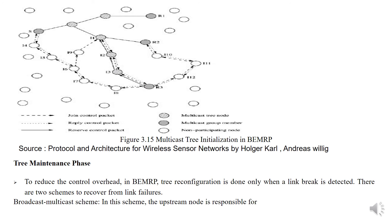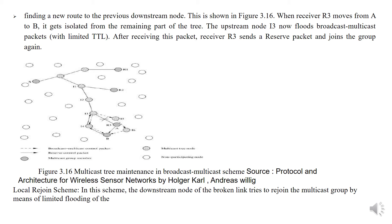The tree maintenance phase: to reduce the control overhead in BEMRP, reconfiguration is done only when a link break is detected. There are two schemes to recover from link failures. Broadcast multicast scheme: in this scheme, the upstream node is responsible for finding a new route to the previous downstream node, as shown in figure 3.16. When receiver R3 moves from A to B, it gets isolated from the remaining part of the tree. The upstream node i3 now floods broadcast multicast packets with limited TTL. After receiving this packet, receiver R3 sends a reserve packet and rejoins the group.